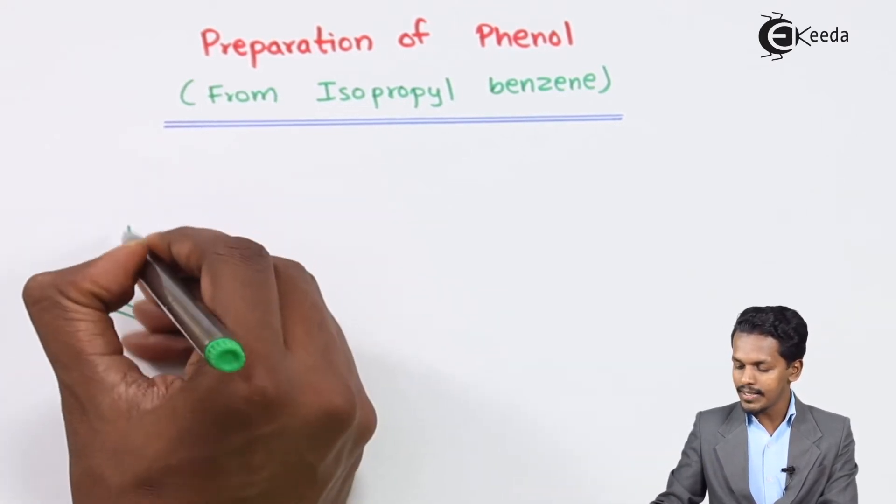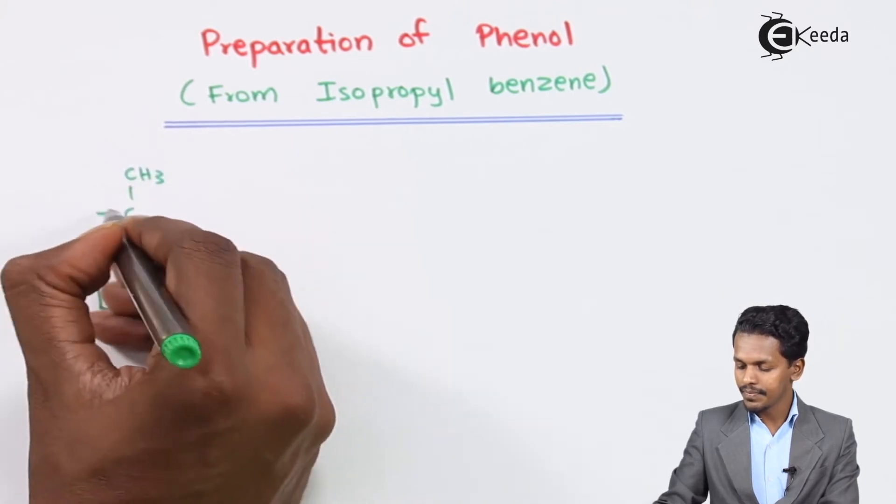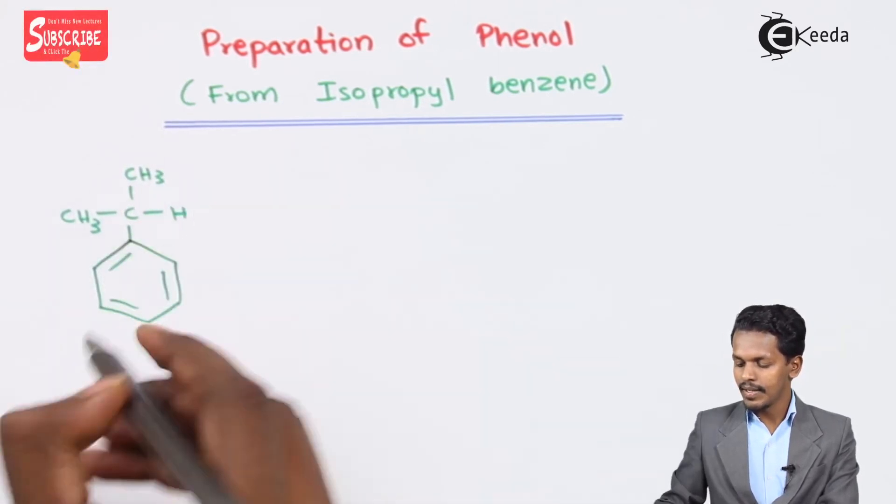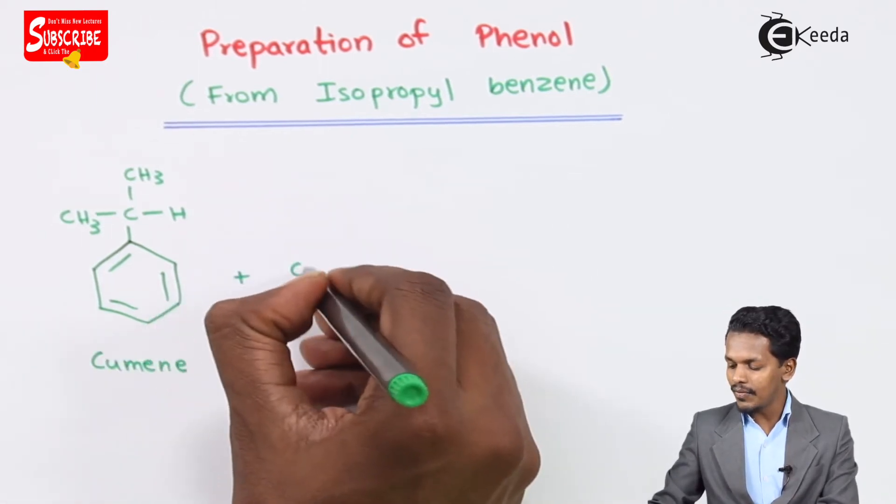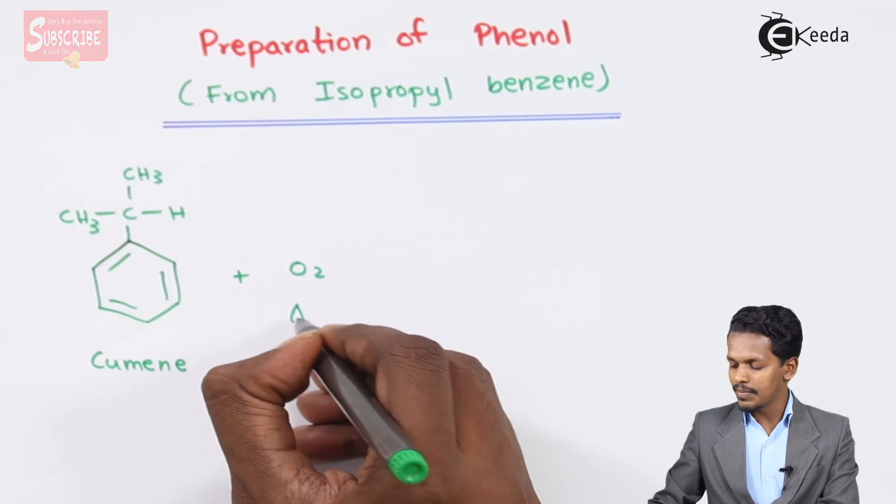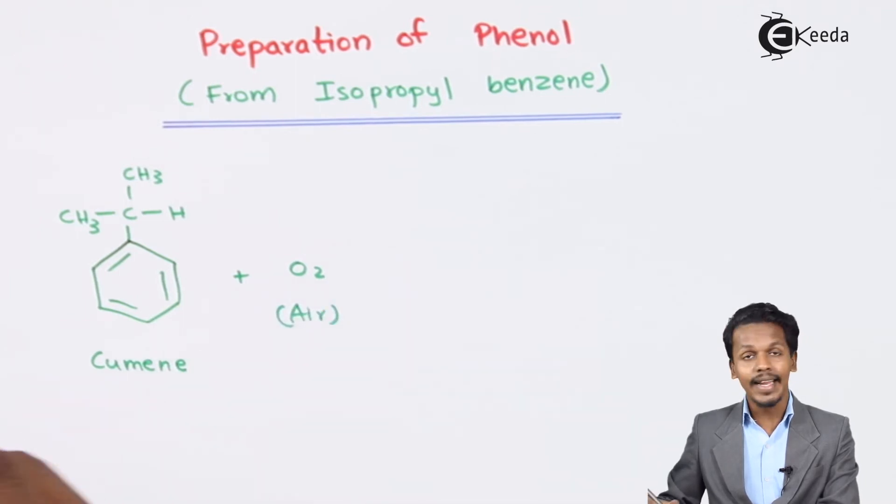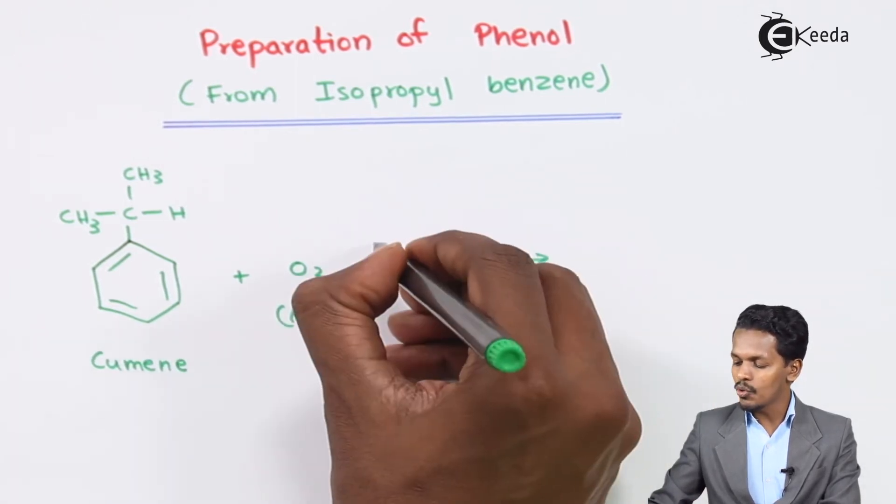The structure of that could be written in this manner. So this is nothing but cumene. The reaction goes on further if we react it with oxygen, the oxygen that has been present in air, and in presence of cobalt naphthalate.